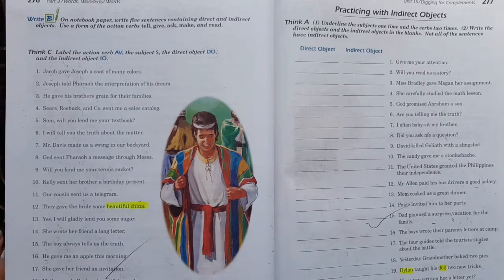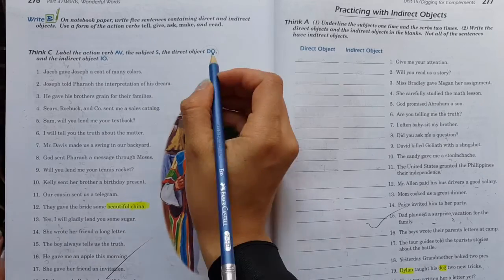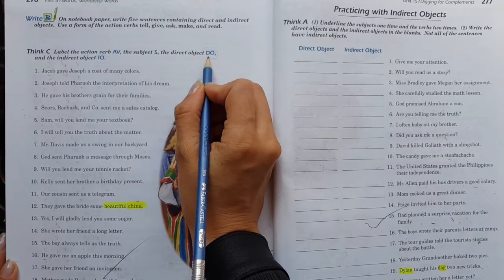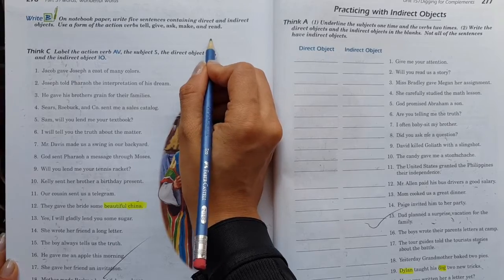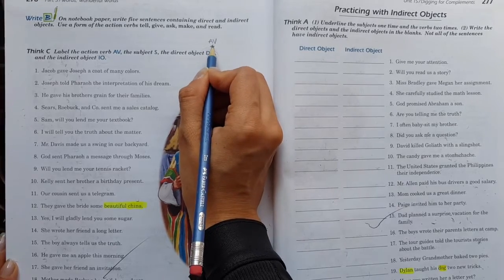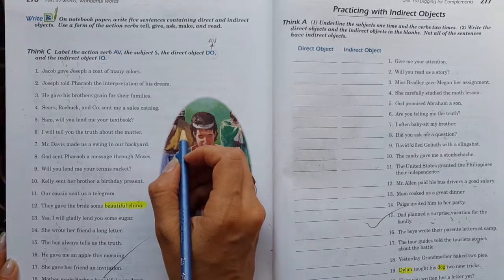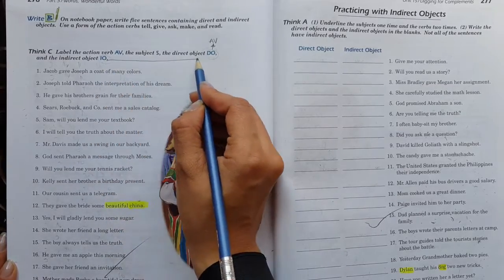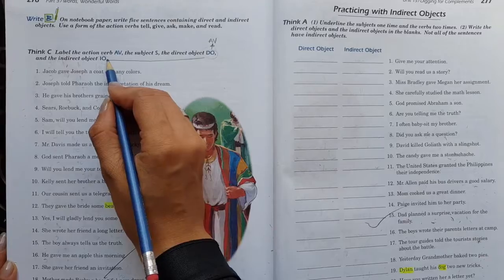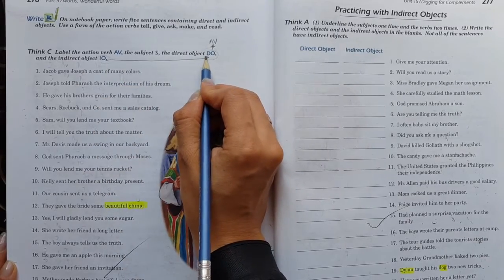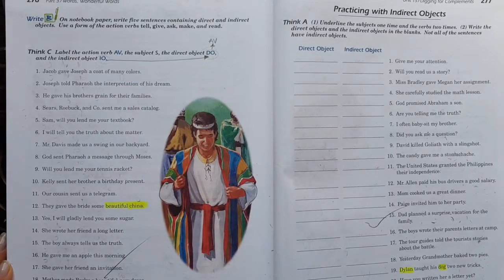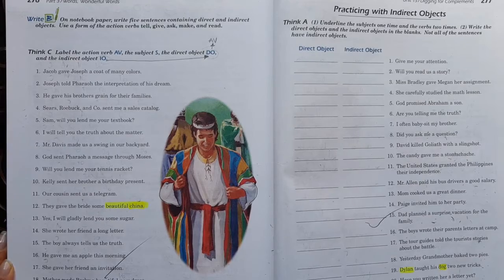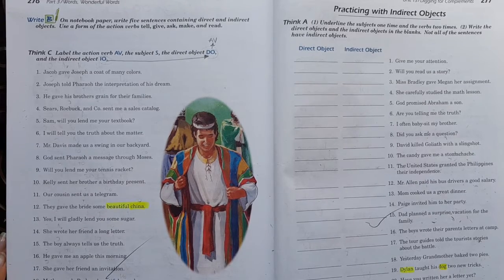Entonces, cuando estamos hablando de objeto directo y de objeto indirecto, vamos a hablar es de action verb, o sea, una acción. Pare de contar. Recuerda que el sujeto es el que realiza la acción.